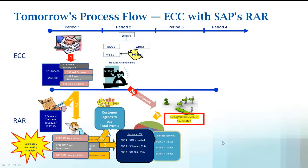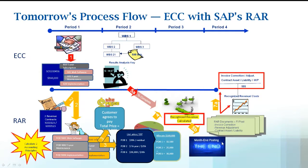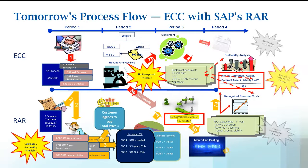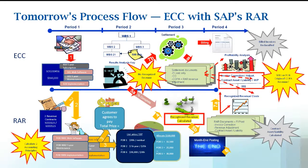As you go through now with RAR in place, we have my results analysis key with my percent complete. It's automatically generating RAR documents, handling invoice corrections, revenue adjustments, contract asset/liability, completely updating and handling it correctly. So now I'm not having to worry — I'm in compliance, but at the same time, my costing and cost documents and COPA, if I'm using that, I still have those. Build invoices get reclassified, I'm using my WBS, I'm using the POBs, and also the contract asset from a liability perspective.